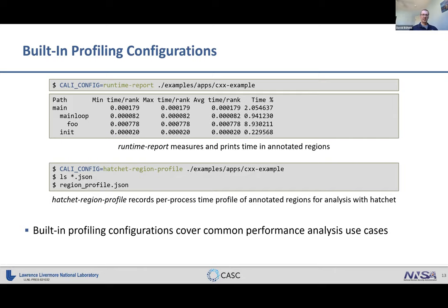The runtime_report isn't the only configuration — it creates a human-readable report, but others create profiling data for processing with Spot, Hatchet, or Caliper's own query tools. For example, the hatchet-region-profile configuration records time spent in annotated regions and outputs a JSON file you can load in Hatchet.